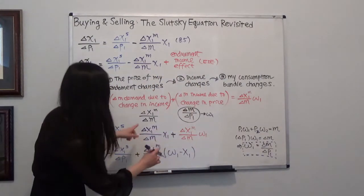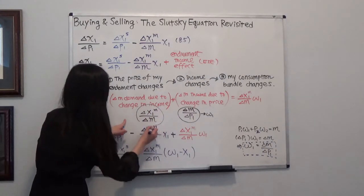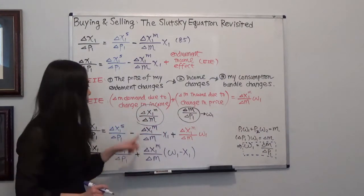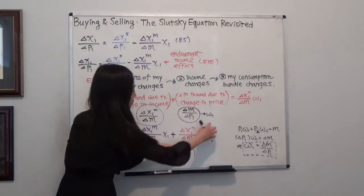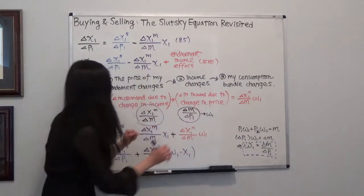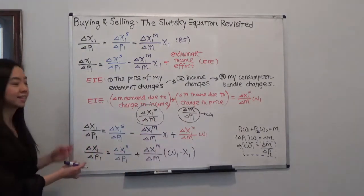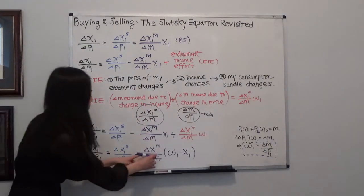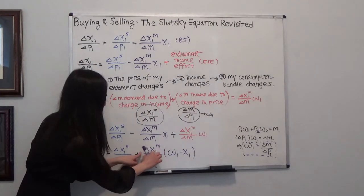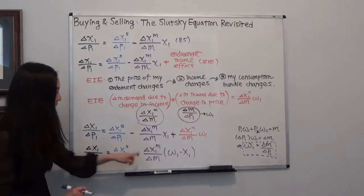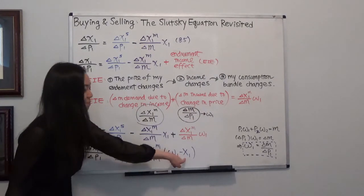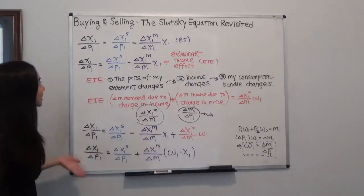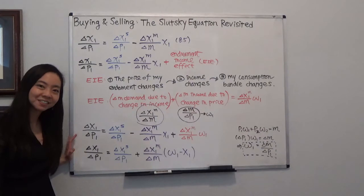And here is my endowment income effect EIE. So my EIE is equal to this term, delta x1 m divided by delta m times this term. But I know that this term is just my omega 1. So I have a new equation. And I can rearrange it. I can pull out delta x1 m divided by delta m. And inside of the bracket, I have omega 1 minus x1. So this is the Slutsky equation revisited.